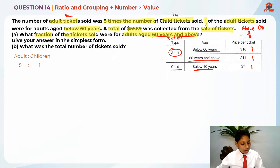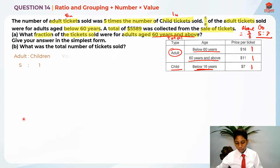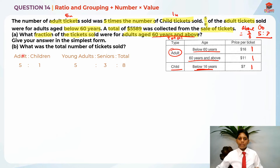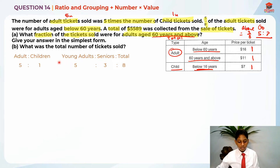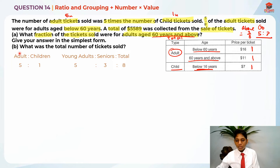So it's basically 5 units is to 3 units is to the total. If you realize, the adult category covers these two sub-categories: young adults below 60 and seniors above 60. So the total of those sub-categories must add up to the adult category. This means the 5 and 8 are supposed to be the same unit, so we need to make the numbers match.